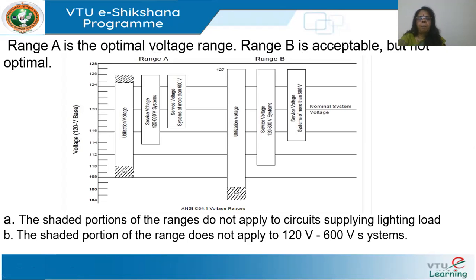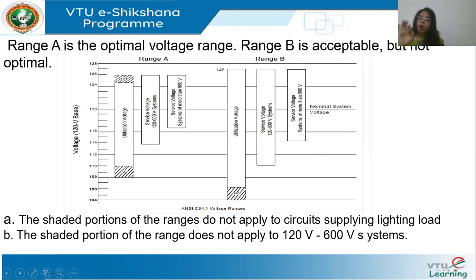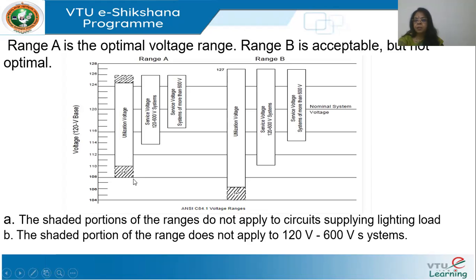Range A is optimal. We have the utilization voltage and the service voltage that can be guaranteed, including for systems where input is more than 600 volts. The standard does not guarantee 120 volts all the time — it allows the utility to permit the voltage to go up to 128 or down to 108.